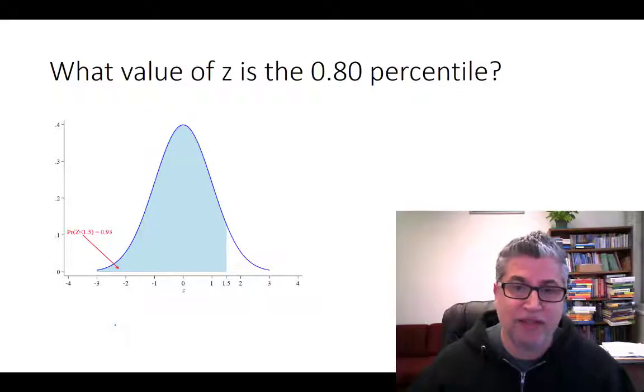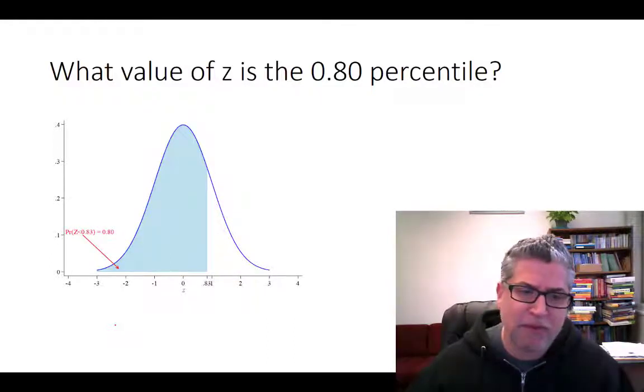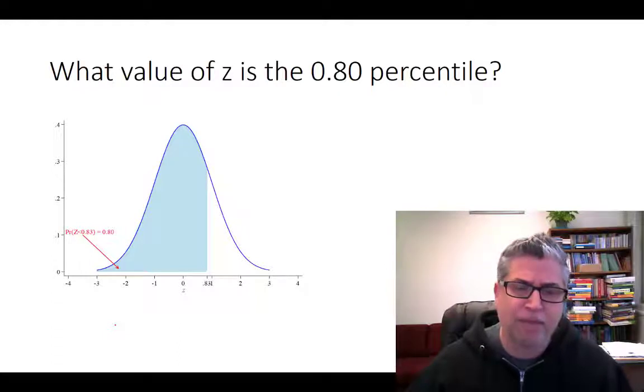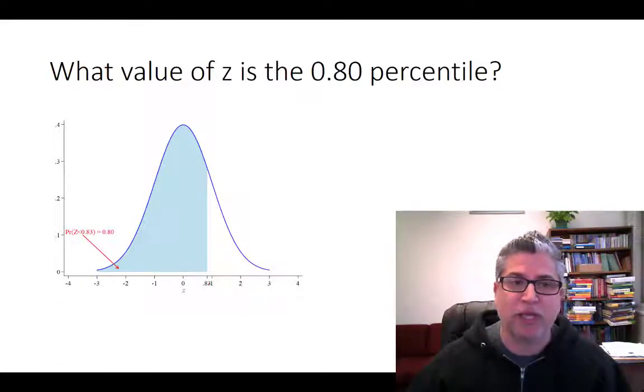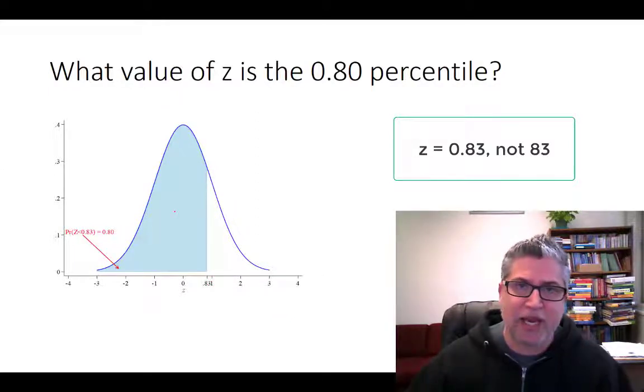Oh, 84, that's way too high, that's 93. But we can try to bracket maybe right there, yeah, right at like a z value of 0.83. That seems to give us an area of 80%.